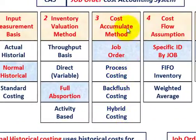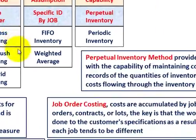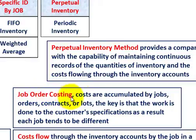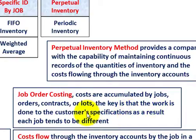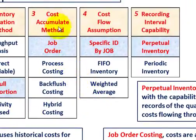Now let's look at our cost accumulation method. We're using job order costing here — everything is marked in blue for the system we're looking at. Job order costing is where costs are accumulated by jobs, orders, contracts, or lots. The key is that the work is done to some customer specification, and as a result each job tends to be different. That takes care of our cost accumulation method.